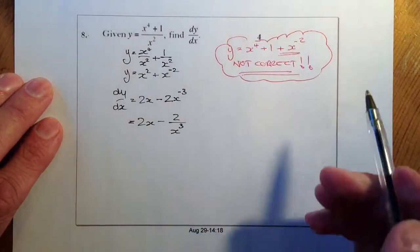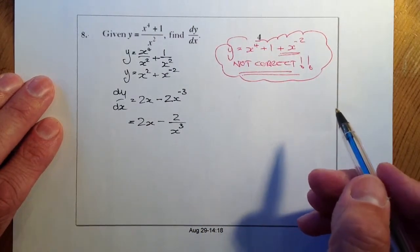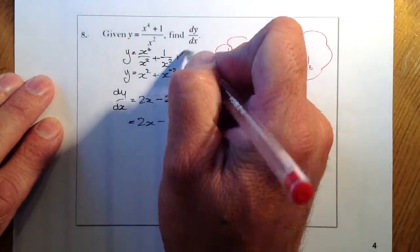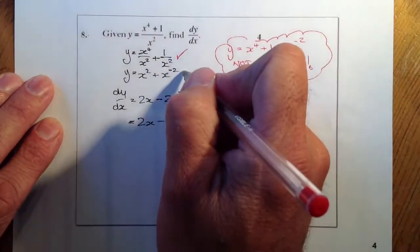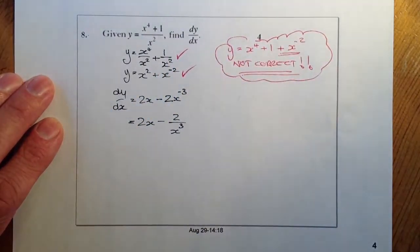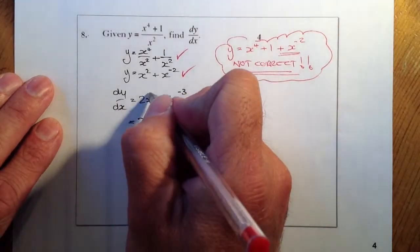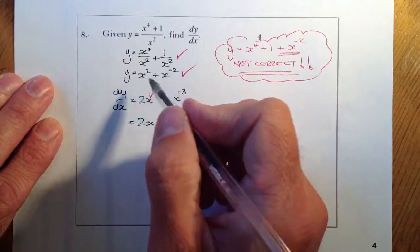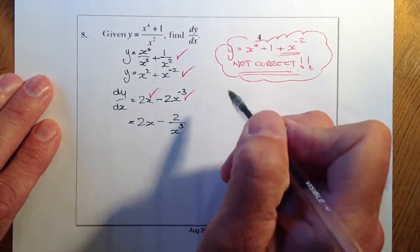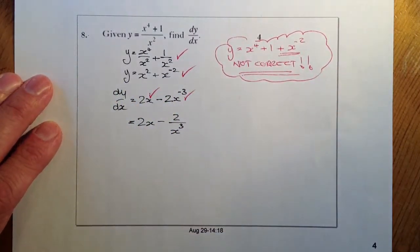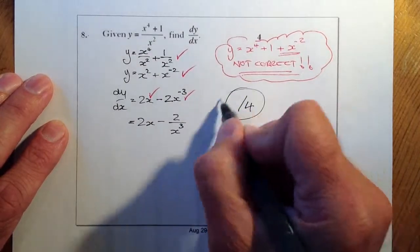So I've got four marks that we're going to gain here. The first mark is for splitting the fraction correctly. Next mark for doing some of the indices work and preparing that correctly. I'll give a mark for each of these, one mark there and one mark there. So this one will be out of four.